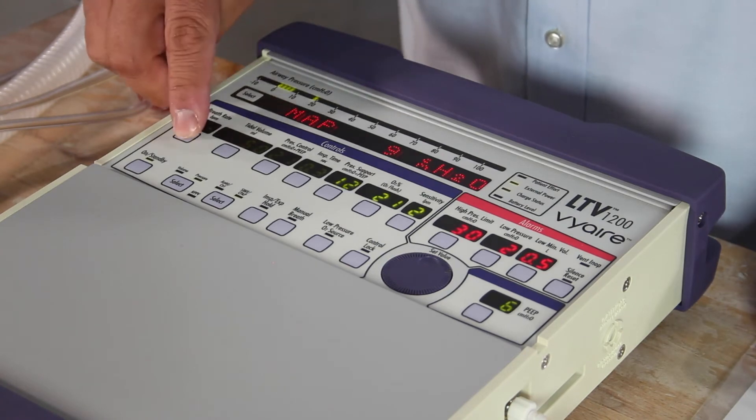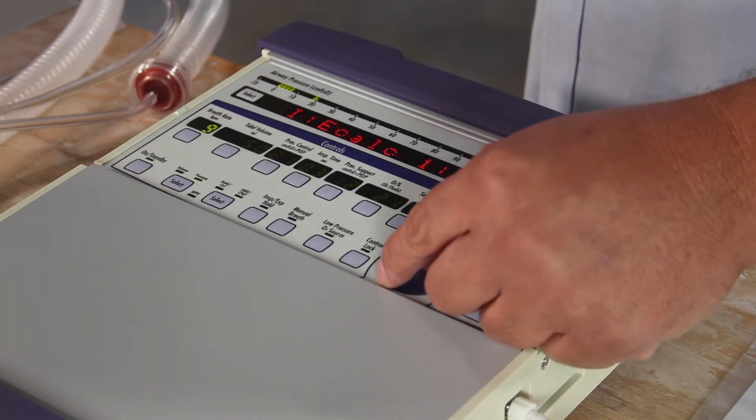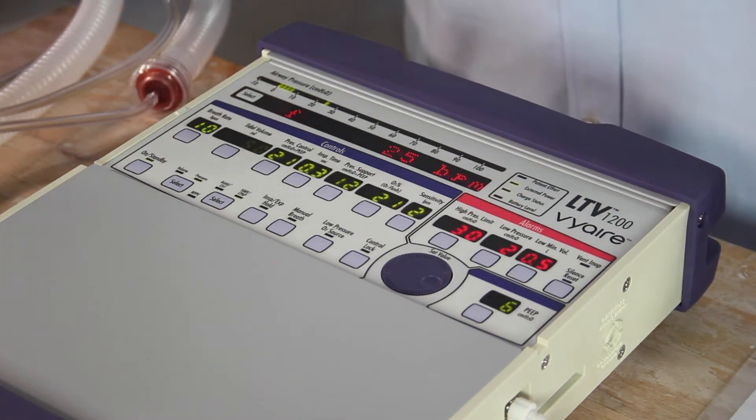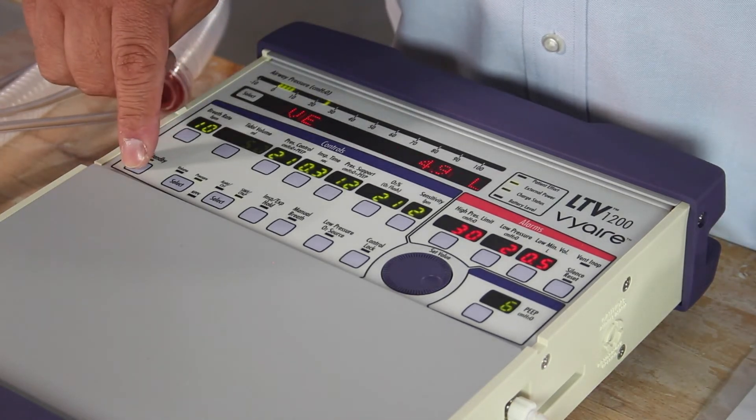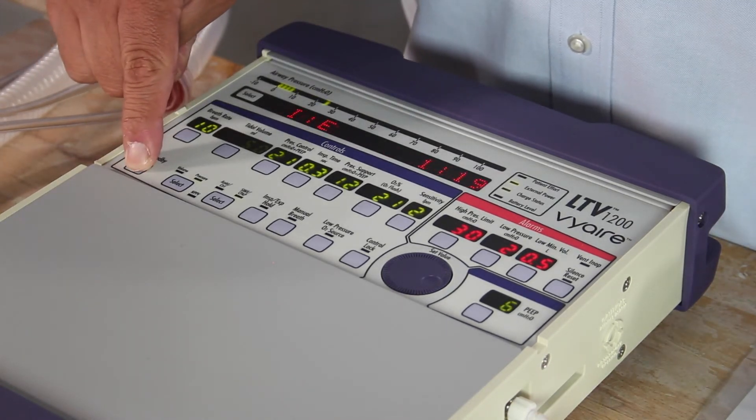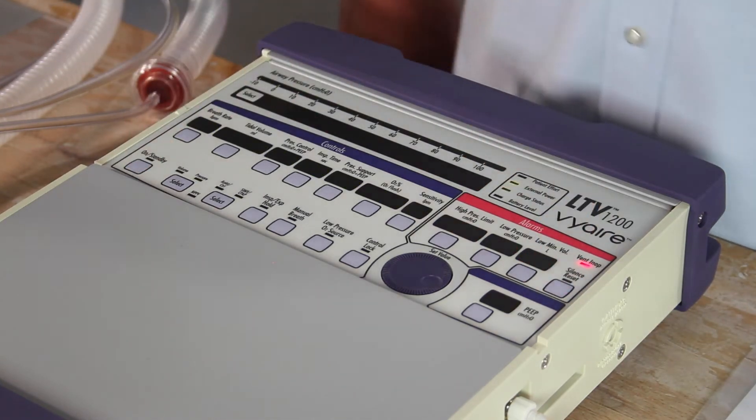Let's go ahead and get out of that mode of ventilation by simply pressing a rate and put a breath rate of 10. We're now back in an SIMV mode of ventilation. I'm going to go ahead and shut the ventilator off. Hold the button down three to five seconds. Silence reset.